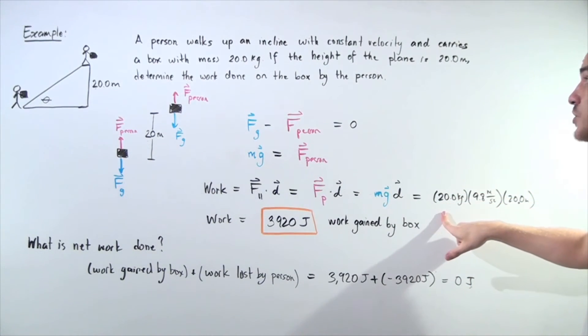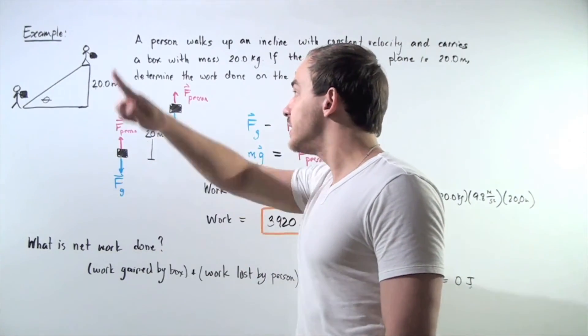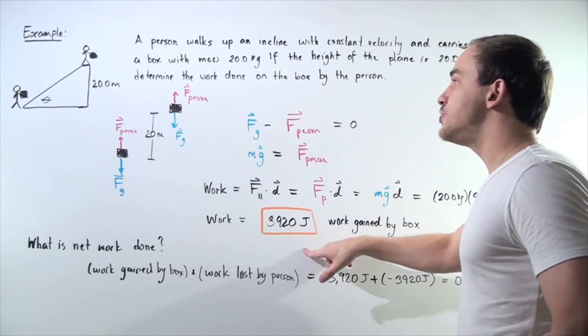We get mass of the object, 20 kilograms, multiplied by g, 9.8 meters per second squared, and multiplied by our vertical displacement, 20 meters. We get that the work done by the person on the box is 3,920 joules.